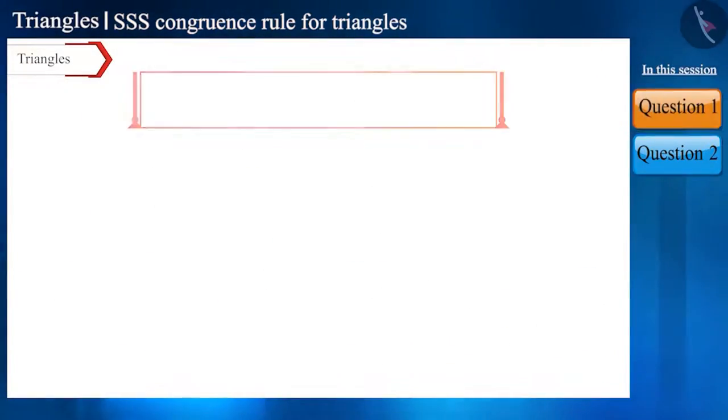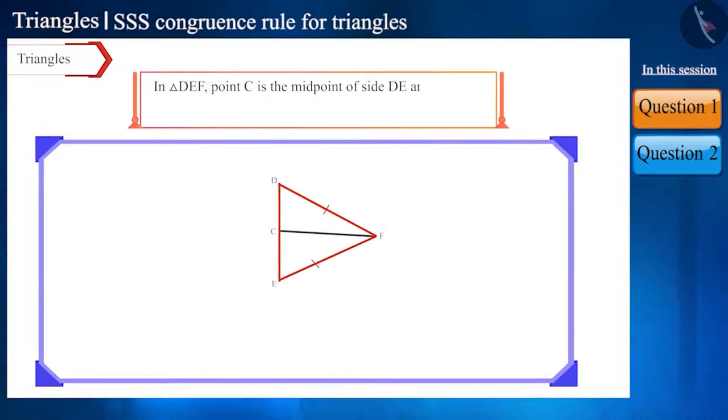Let's start with a question. In triangle DEF, point C is the midpoint of side DE and side EF is equal to side FD. Then, are triangle CEF and triangle CDF congruent?